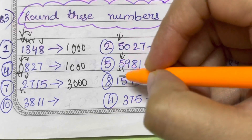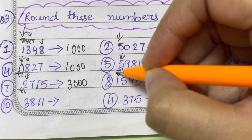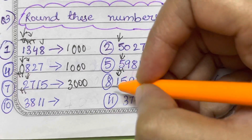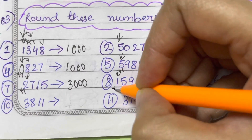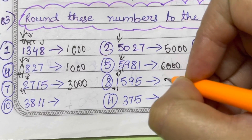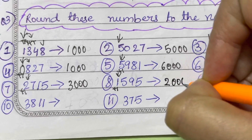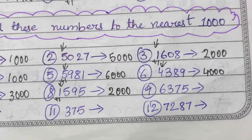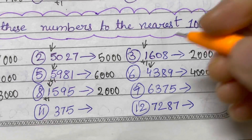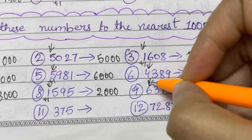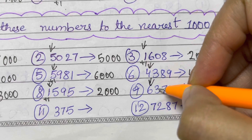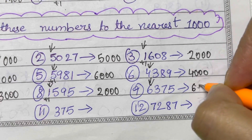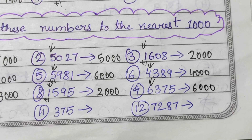1,595. The thousands place is 1. The digit after that is 5, which is 5 or more than 5, so you add plus 1. So 1 plus 1 is 2, and the rest of the digits are replaced by 0, so 2,000. Next, 6,375. The thousands place is 6, and the digit after that is less than 5, so 6 won't change — 6,000.